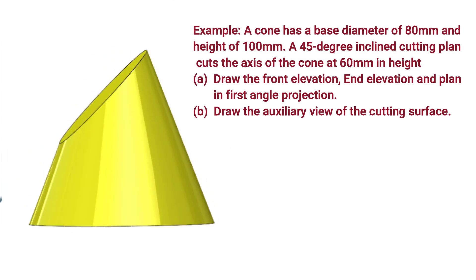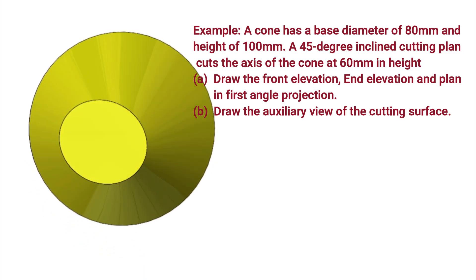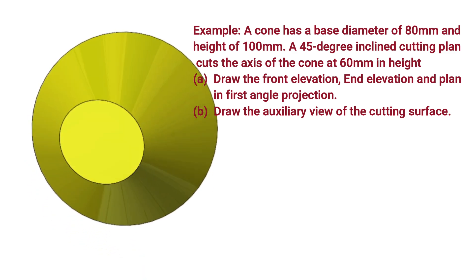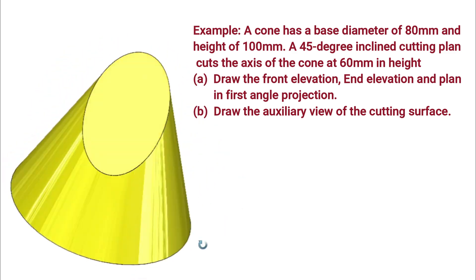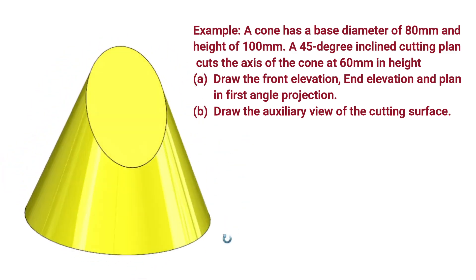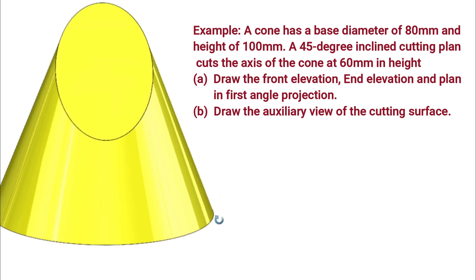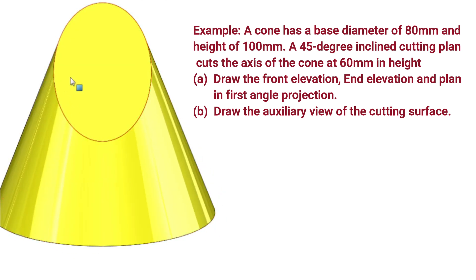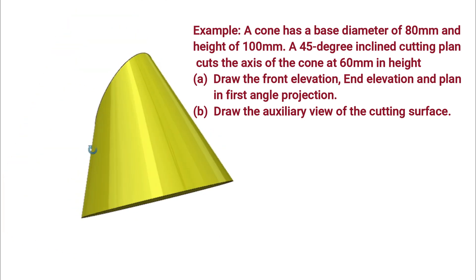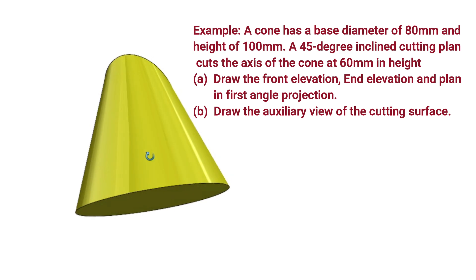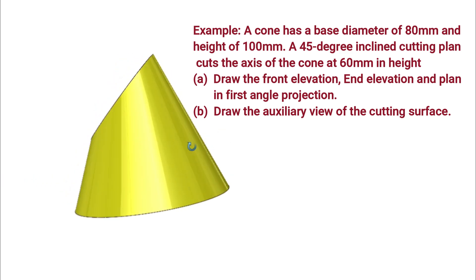The cone has a base diameter of 80 millimeters and a height of 100 millimeters. A 45-degree inclined cutting plane cuts the axis of the cone at a height of 60 millimeters. Draw the front elevation, end elevation, and the plan in first angle projection. The second question asks to draw the auxiliary view for the cutting surface.